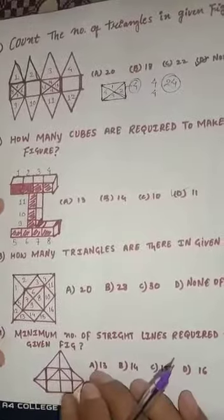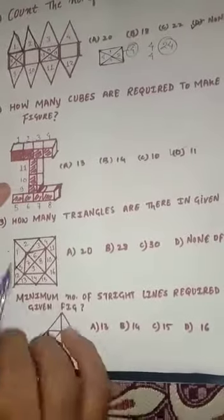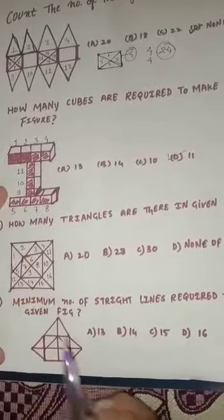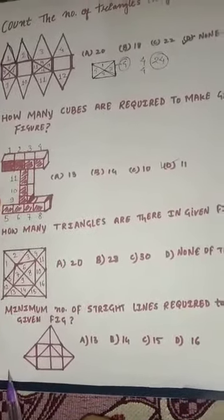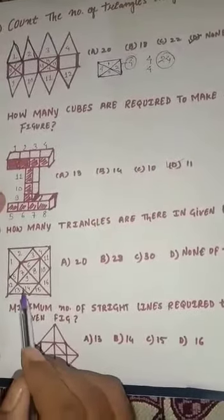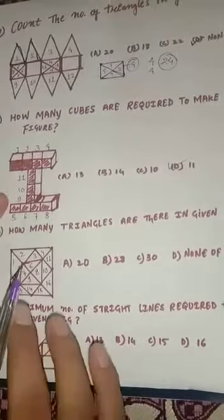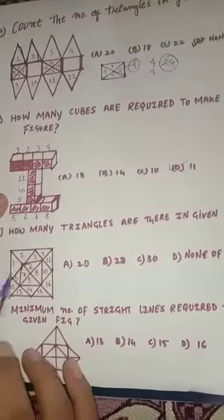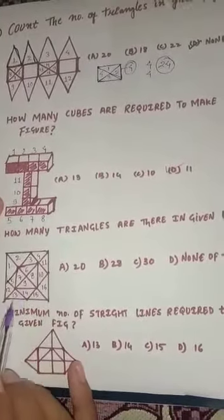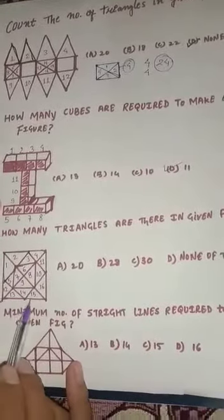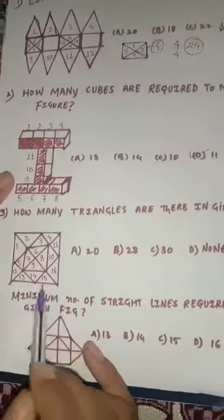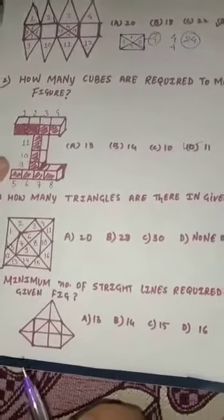Now the next question again asks: how many triangles are there in the given figure? We have to count how many triangles are in this new figure. First, we count the ones we can easily find: 1, 2, 3, 4, 5, 6, 7, 8, 9, 10, 11, 12, 13, 14, 15, 16 — so 16 triangles are easily found.